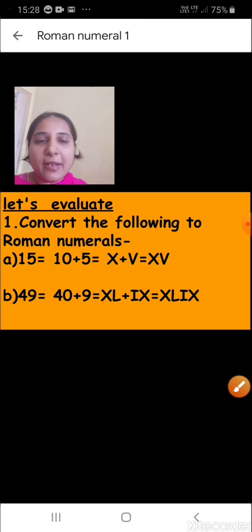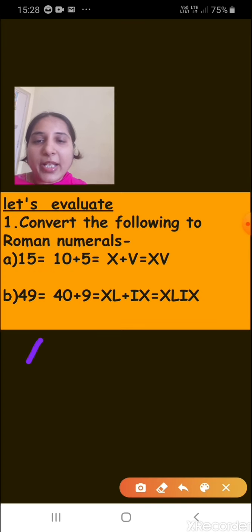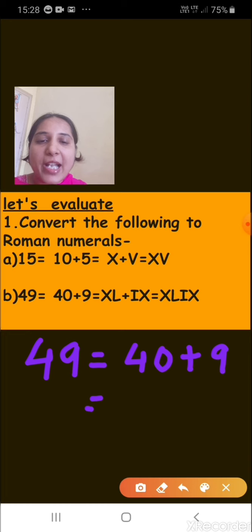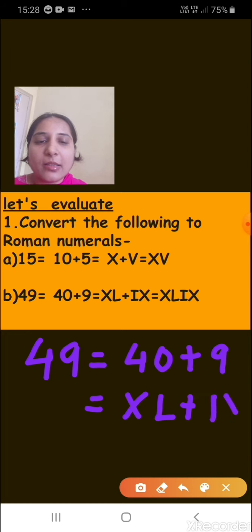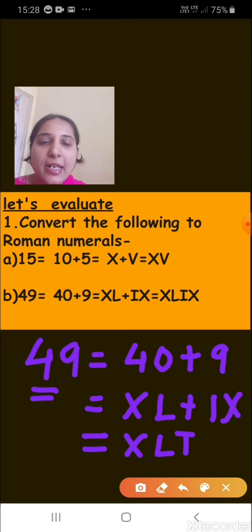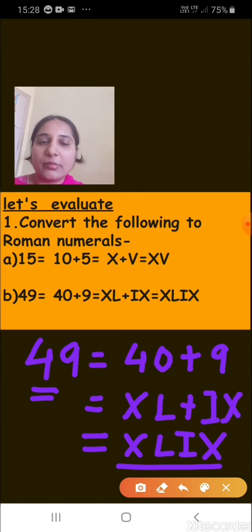Part B is 49. First we write 49 in expanded form: 40 plus 9. We write 40 as XL, and 9 as IX. Together, 49 is represented as XLIX.